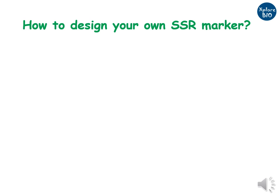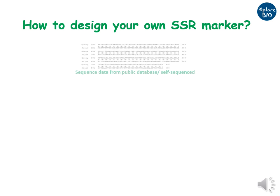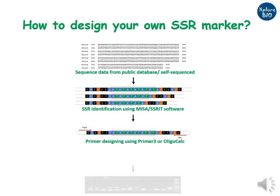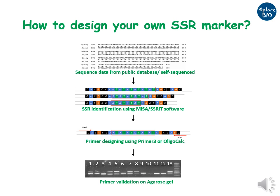For those interested in developing their own SSR markers: you will need DNA sequences either downloaded from public databases like NCBI or Ensembl, or you can generate your own sequences. Next, search these sequences for SSRs using tools like MISA or SSR-IT. Once you know the sequence, design the SSR flanking primer using Primer3 or Oligo-Kelsey software. You can then validate the primer by amplifying it in genomic DNA and checking results on an agarose gel. In this gel, the SSR marker is validated in 13 individuals, showing differences in banding pattern. Such polymorphic markers are used for the various applications already discussed.